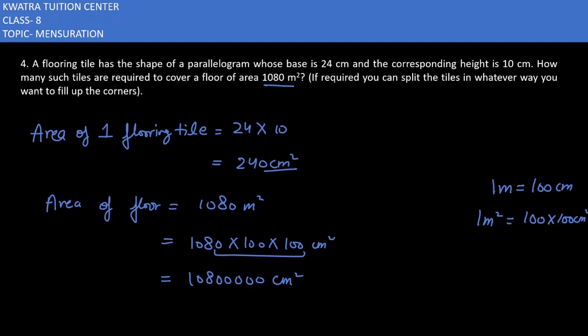To find the number of tiles, divide the area of the floor by the area of one tile. The floor area is 1080 followed by four zeros, divided by 240. The zeros cancel, and dividing 1,080,000 by 24 gives 45,000 as the number of tiles.